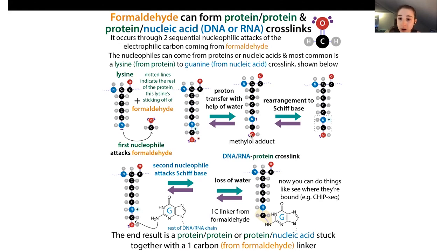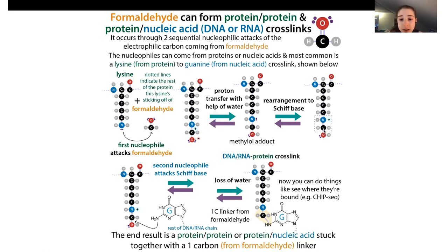The methylol adduct can rearrange to a Schiff base - we've talked about Schiff bases before, they have a nitrogen double bonded to a carbon. This is actually the cation form. Just like when the carbon was bound to the electronegative oxygen and became electrophilic, nitrogen is also electronegative. So this carbon becomes electrophilic - especially because this nitrogen really wants electrons right now. This carbon is now vulnerable to attack from a nucleophile, which can come from another protein, the same protein in a different place, DNA, or RNA.